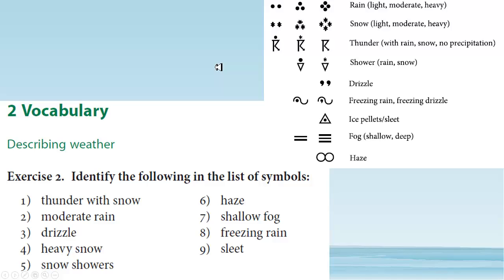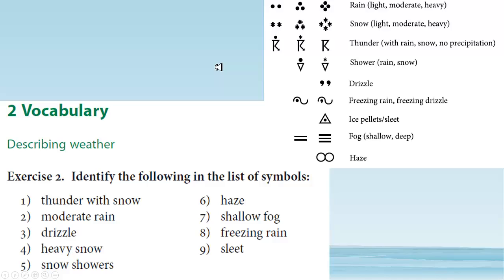Hopefully you learned a little bit about the symbols last time in Unit 4A. Let's look at them again and see how many you got right. Thunder with snow — here is the sign for thunder, and with rain is a dot over it, with snow an asterisk over it, no precipitation — nothing over it. Moderate rain: we have rain — light, moderate, and heavy — so it's going to be the three dots. Drizzle has a sign all its own, it looks like apostrophe signs.